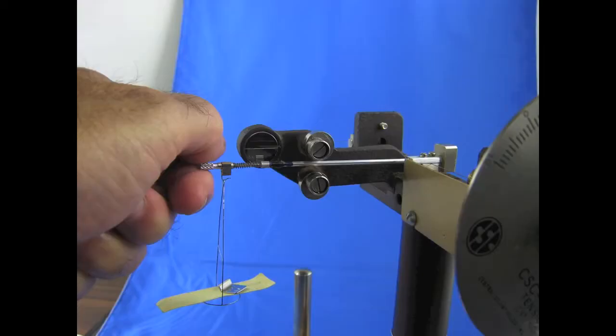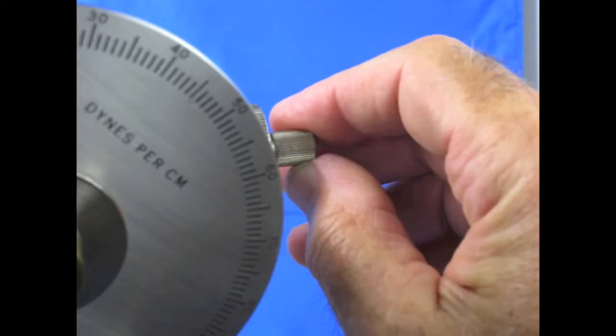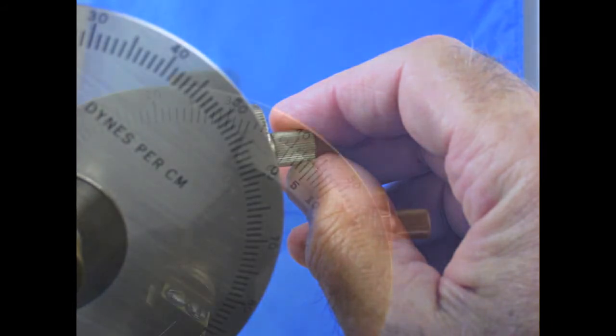If the calculated number is greater than the dial reading, use the torsion arm adjustment nut and turn it counterclockwise. If the calculated number is lower than the dial reading, turn the adjustment nut clockwise. One full rotation is about three dynes per centimeter. Repeat this until you can bring the pointer to the line using the adjustment knob, and the dial vernier reading is within 0.5 dynes of the calculated number.